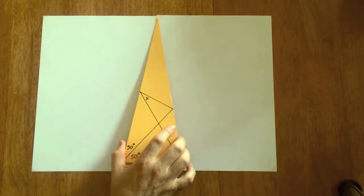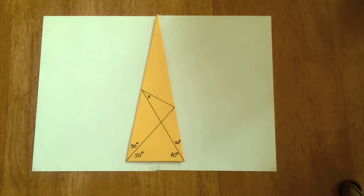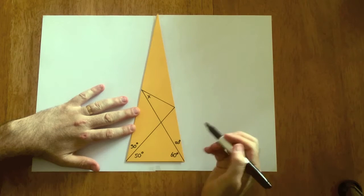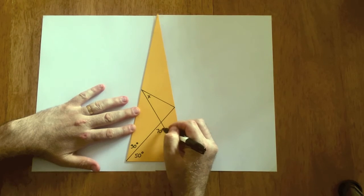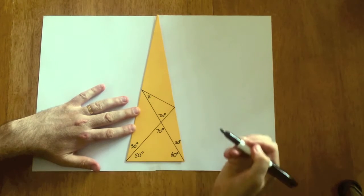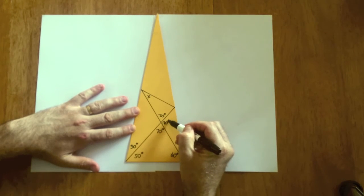So you can start by, for example, filling in some angles here. You can see here, there's a triangle here, 50, 60. The angles have to add up to 180, so that's 70 degrees. And therefore that's 70 degrees as well.